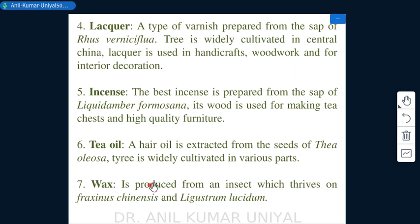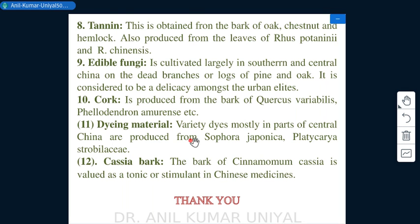Wax is produced from an insect that thrives on Fraxinus chinensis and Ligustrum lucidum trees. Tannin is obtained from the bark of oak, chestnut, and hemlock, and is also produced from the leaves of Rhus potanini and Rhus chinensis.